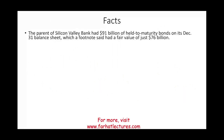Here are some facts straight from the Wall Street Journal article. The parent company had $91 billion in held-to-maturity bonds as of December 31st on the balance sheet, and a footnote stated that those bonds had a fair value of $76 billion. So the losses were disclosed — not reported on the financial statement, but they were not hidden.